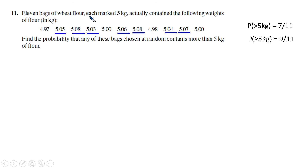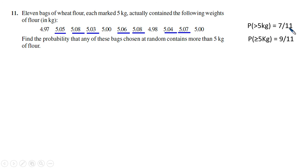Another example: 11 bags of wheat flour each marked 5 kg actually contain different weights. There are 11 bags. Find the probability that a bag chosen at random contains more than 5 kg. There are seven bags with more than 5 kg, so the probability is 7 by 11. If the problem asked for more than or equal to 5 kg, then it would be 9 by 11.